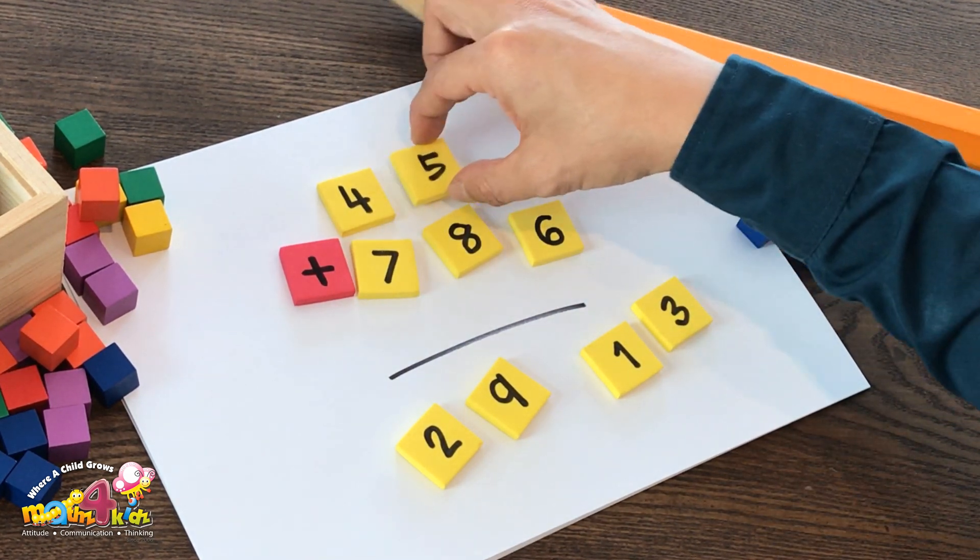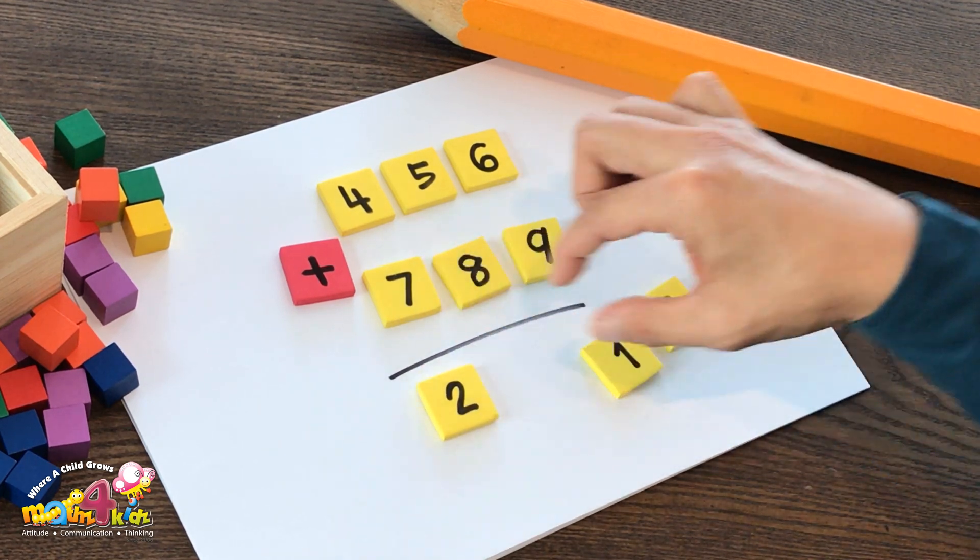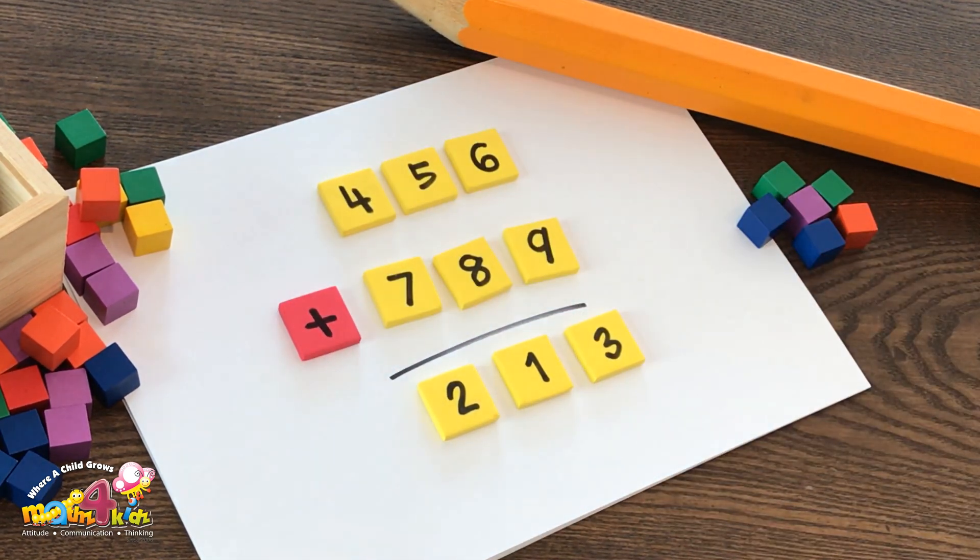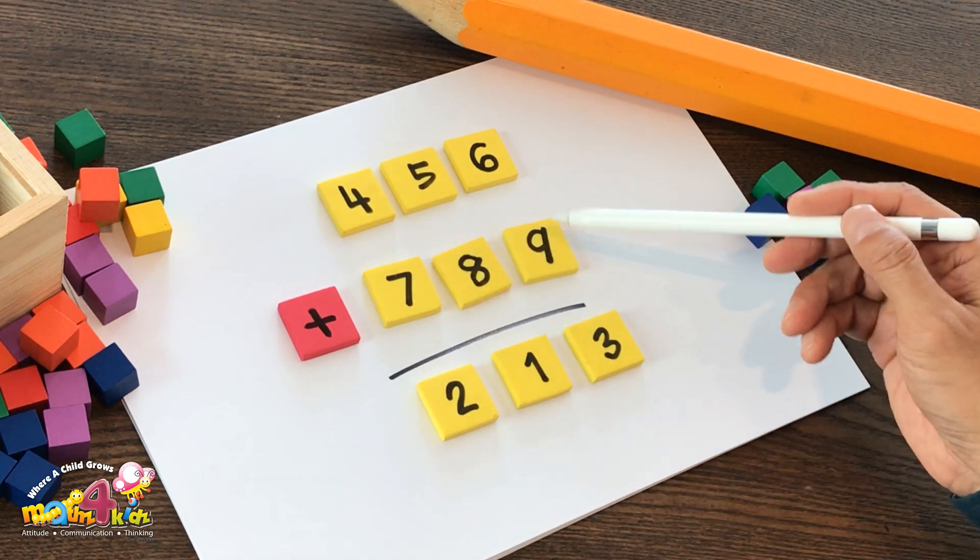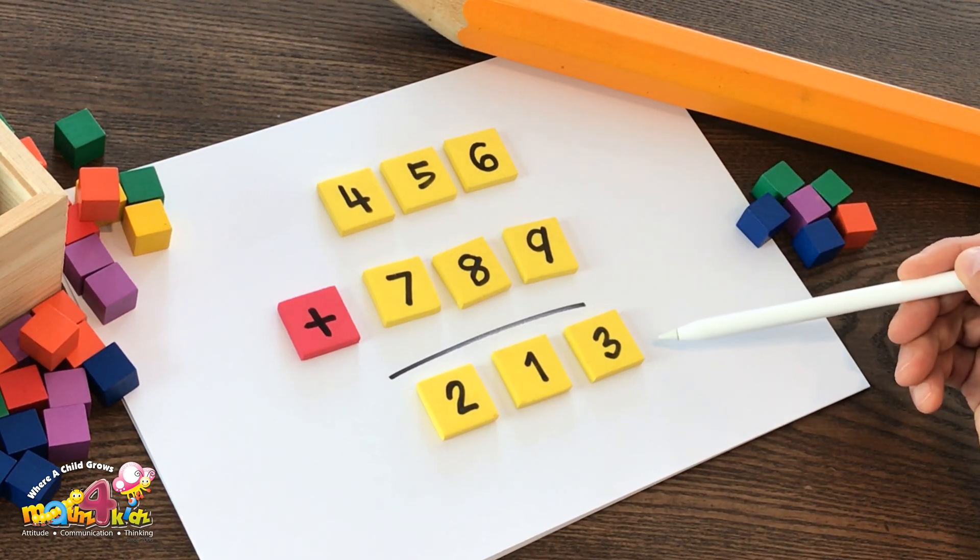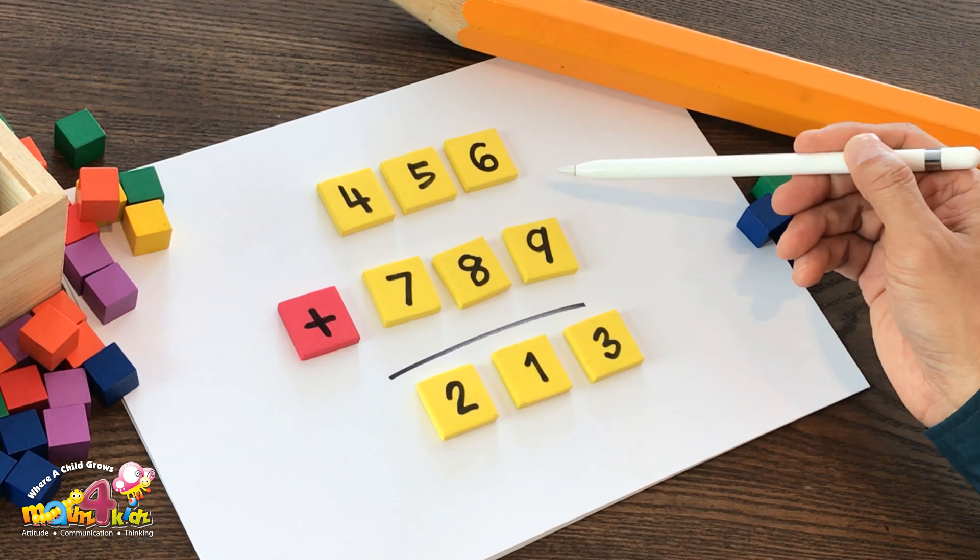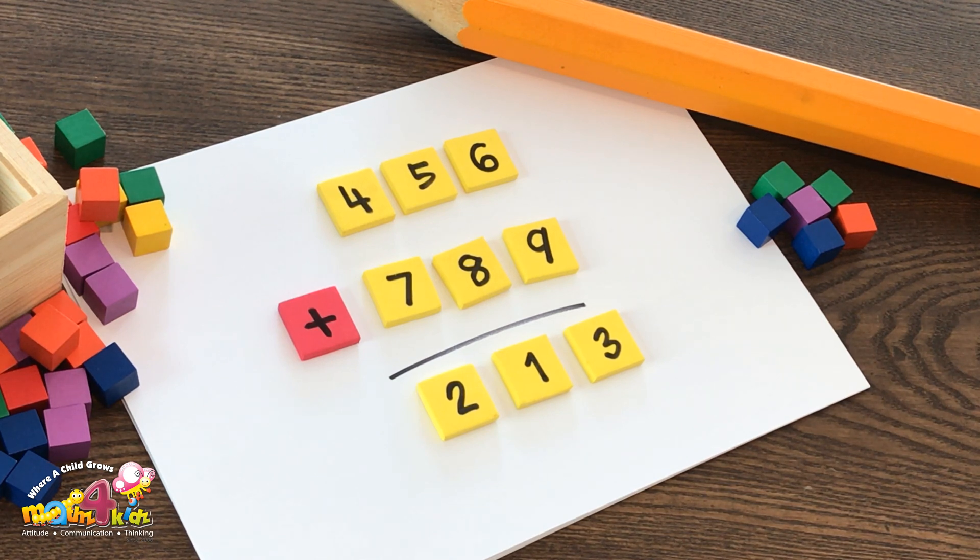The problem today is to use the nine digits to make three three-digit numbers so that the sum of two of them is equal to the other. In other words, using the nine digits, you make three numbers. Every number is a three-digit number, and when you add two of them together to get a sum, the sum must be the other number. This is clearly not correct because four hundred fifty-six and seven hundred eighty-nine is not two hundred and thirteen. Our problem today is to rearrange the digits so that the addition equation is correct.